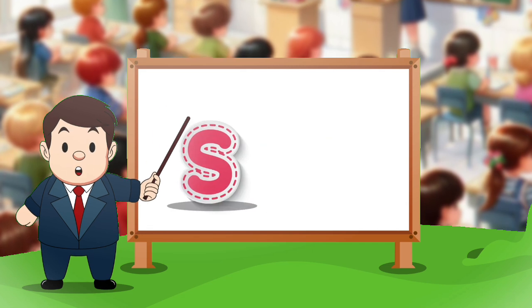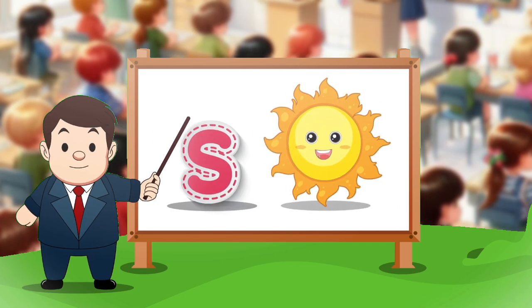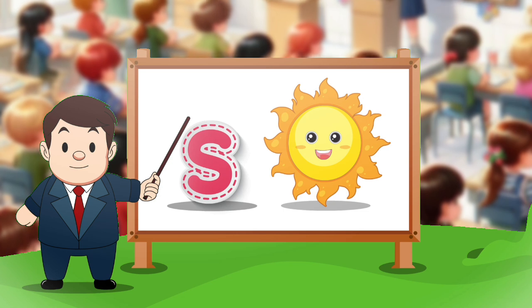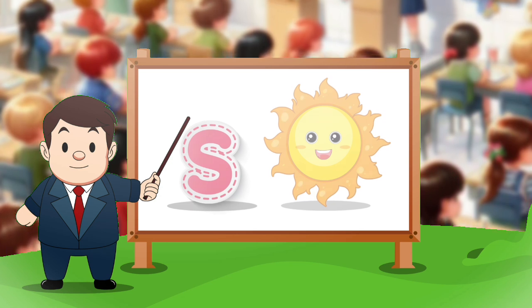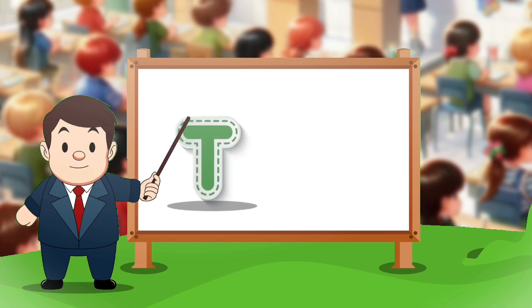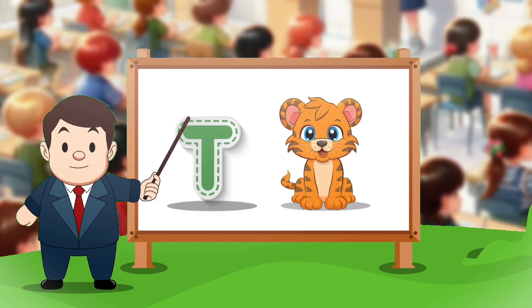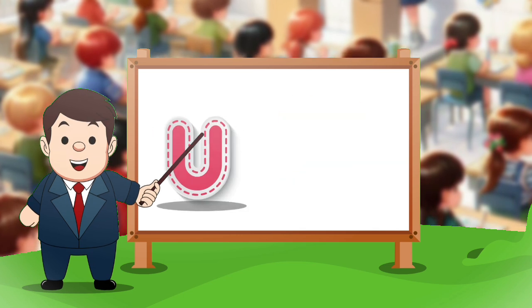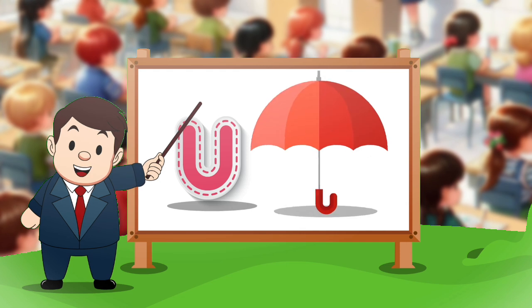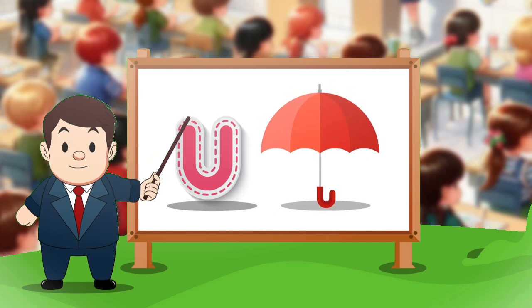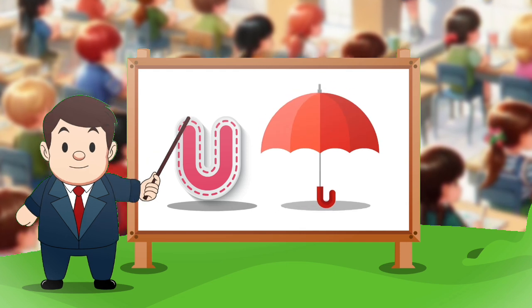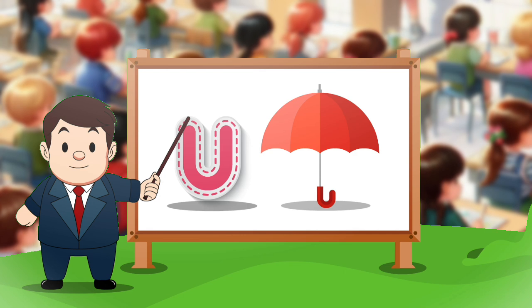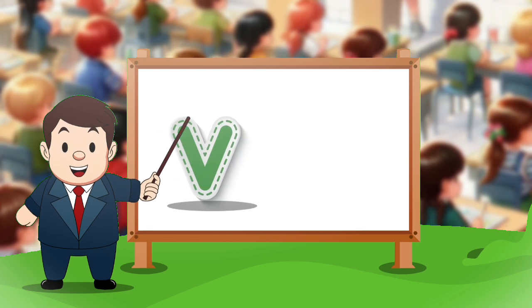S. S for sun. T. T for tiger. U. U for umbrella.